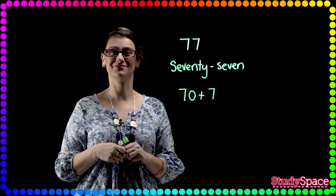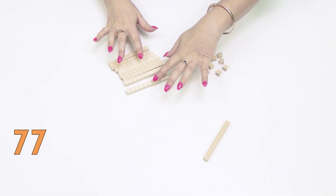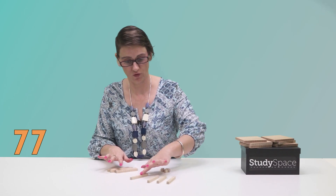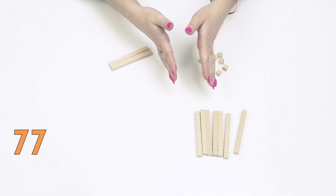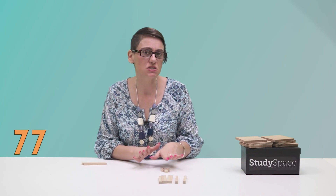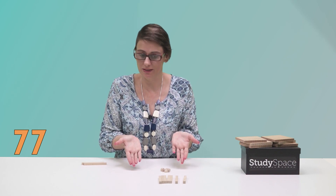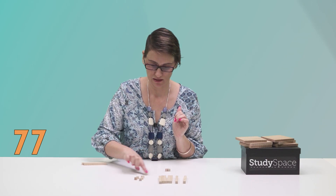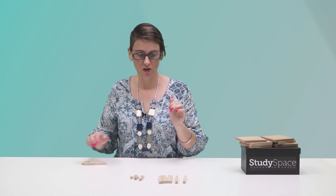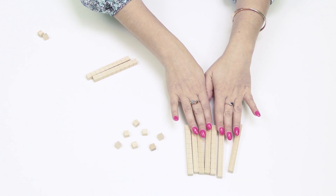Let's see what it looks like using base ten. Our next number is 77. So how are we going to use our blocks to make 77? How many tens do we need? Seven. So 1, 2, 3, 4, 5, 6, 7 — there's my seven tens, or my seven longs. And how many ones do I need? Seven. So I'm going to need seven ones: 1, 2, 3, 4, 5, 6, and 7. So I've got seven longs, or seven tens, and seven ones. My number is 77.